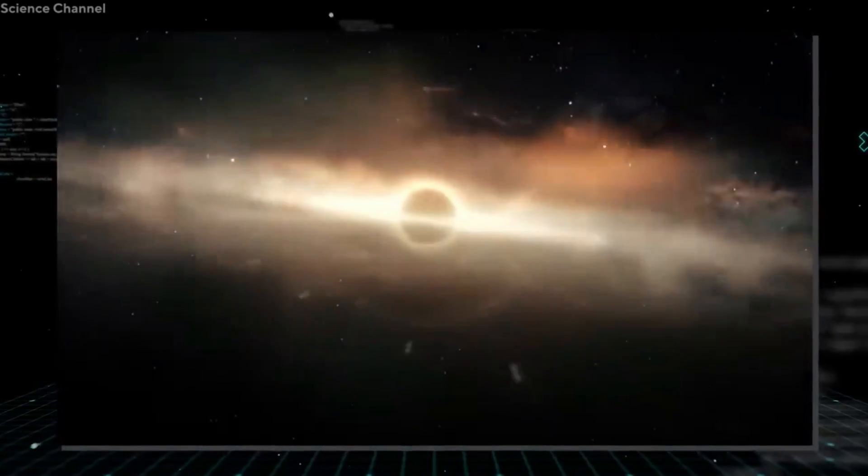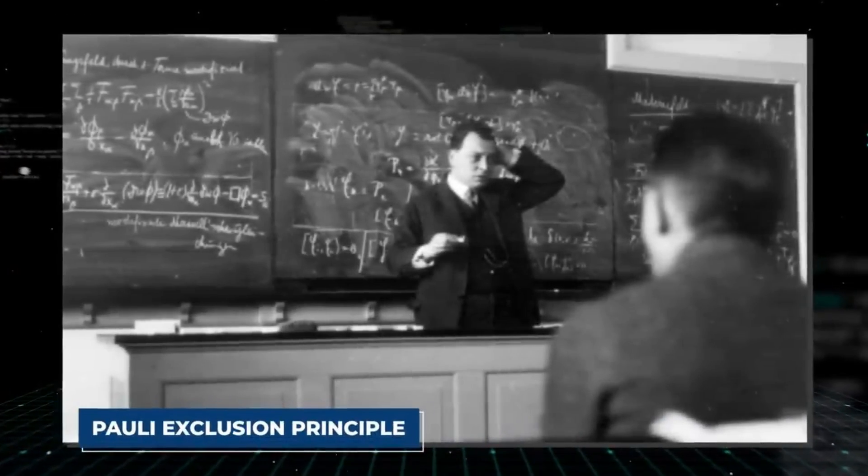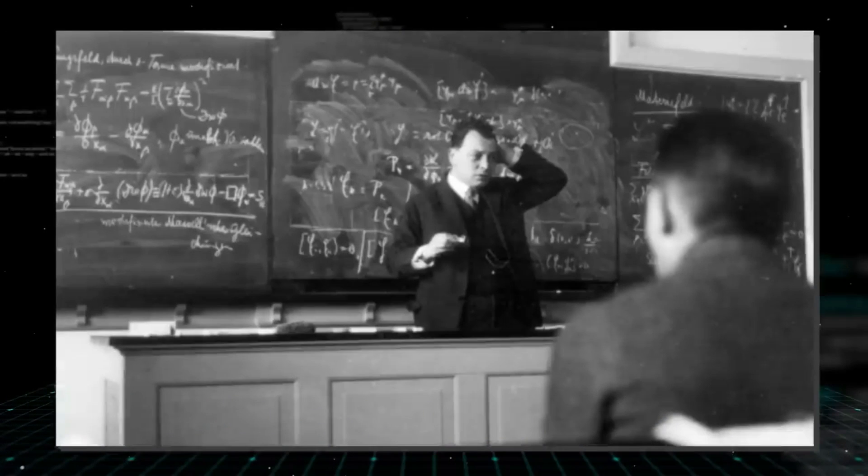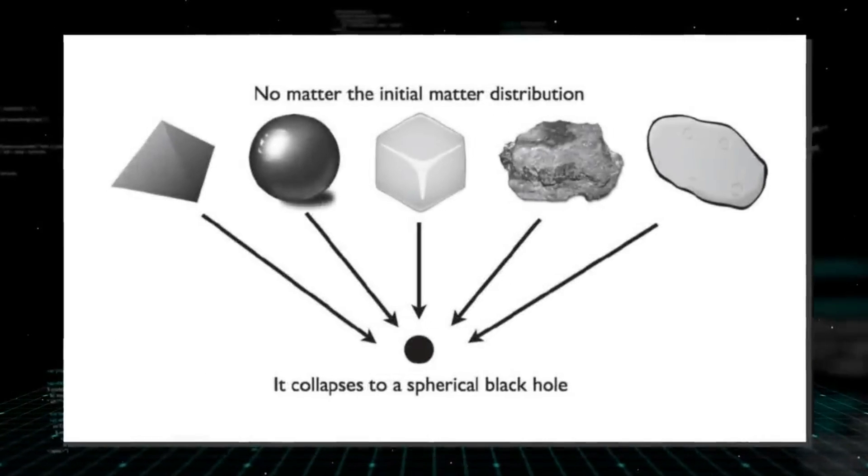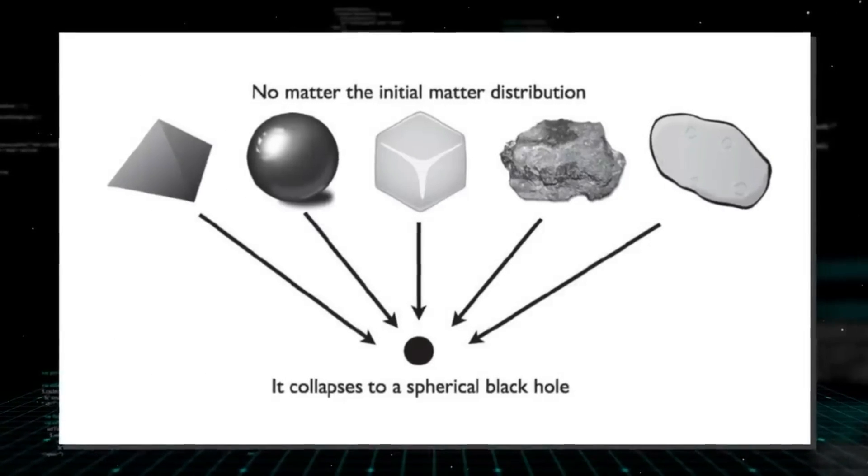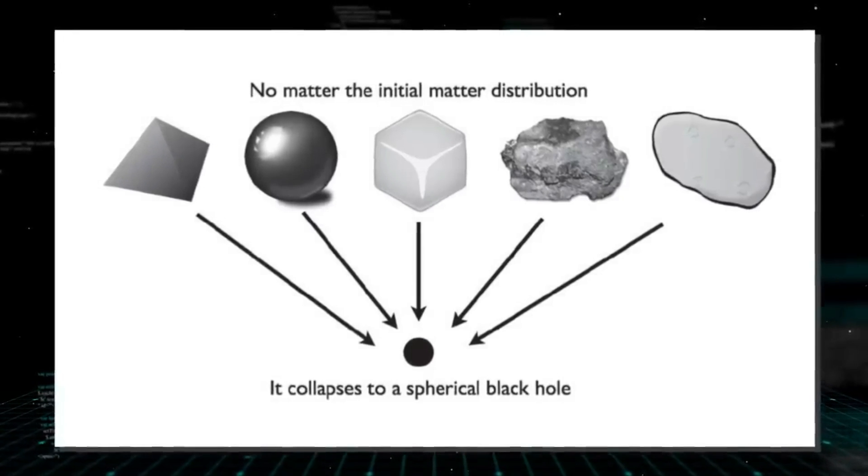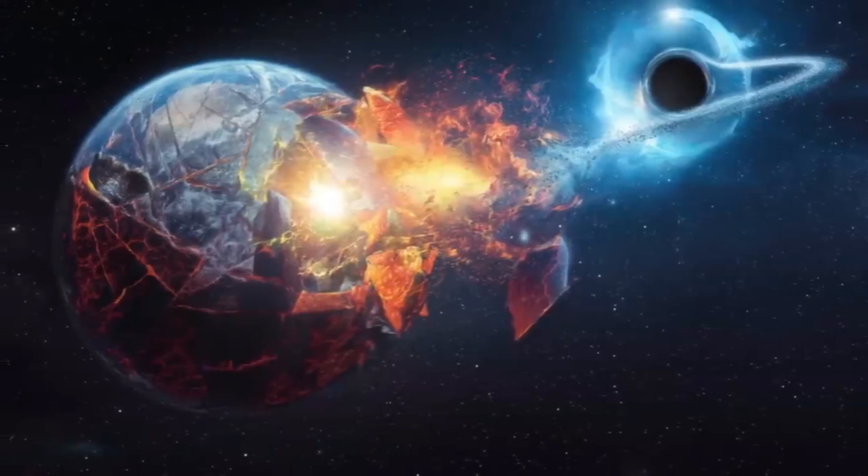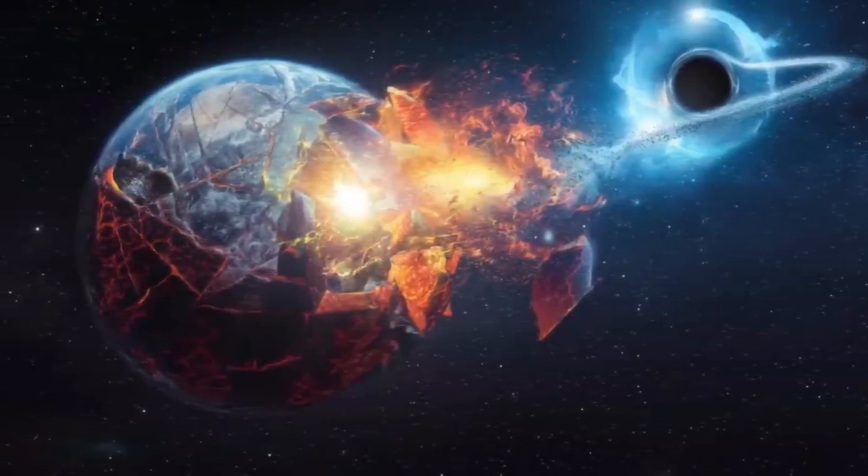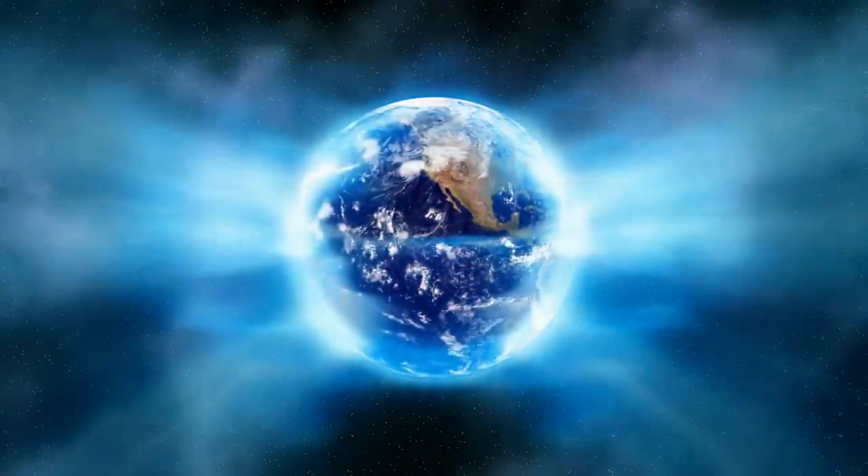is thought to be the remains of the Big Bang and provides evidence for the existence of baby universes. The cosmic microwave background radiation is a faint glow that pervades the universe and is thought to be the Big Bang's afterglow. Baby universes, if they exist, would have their own Big Bangs and cosmic microwave background radiation.